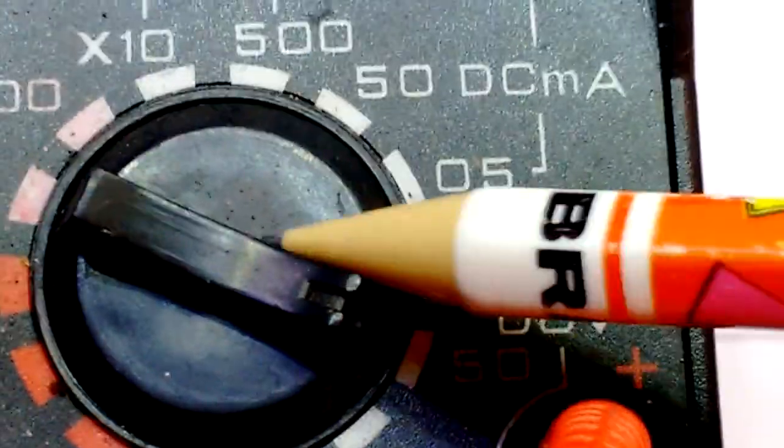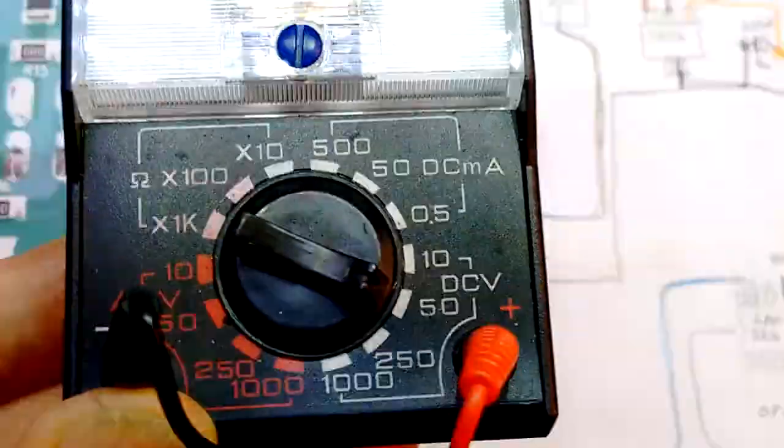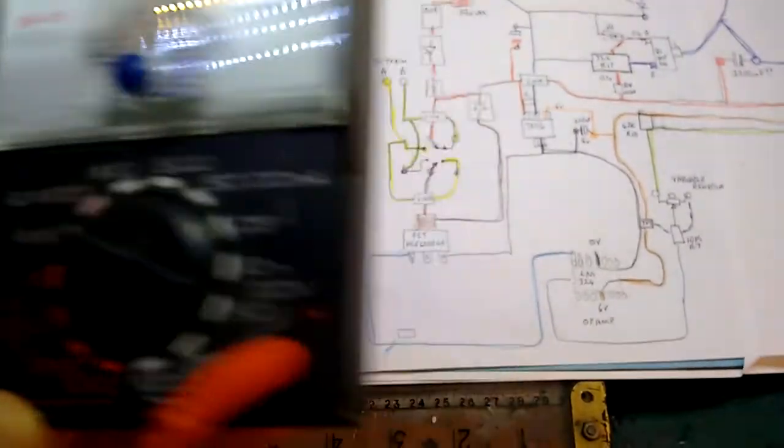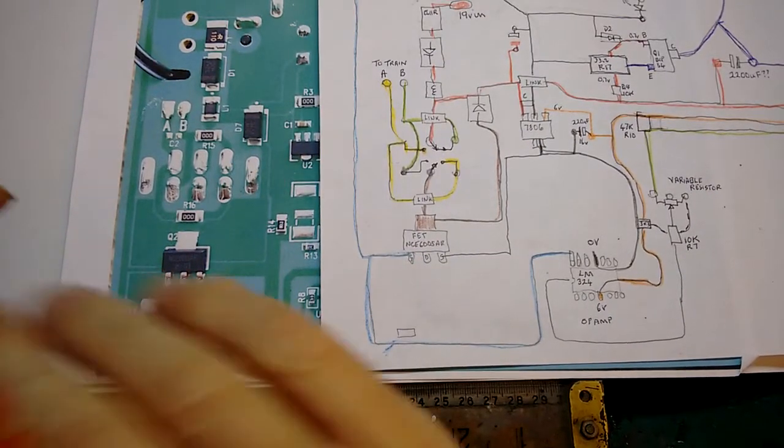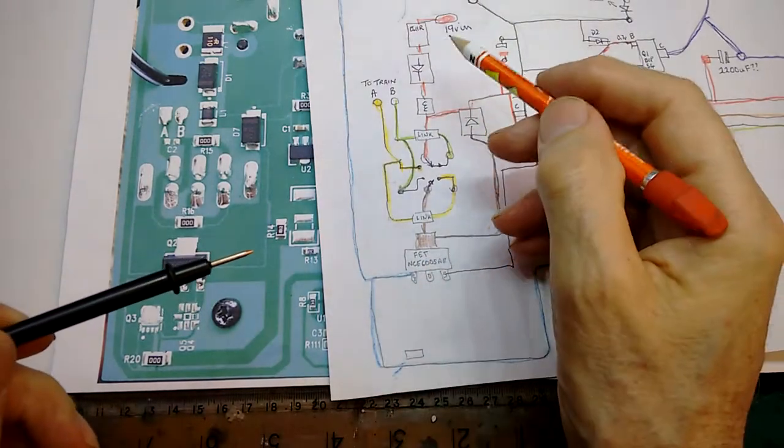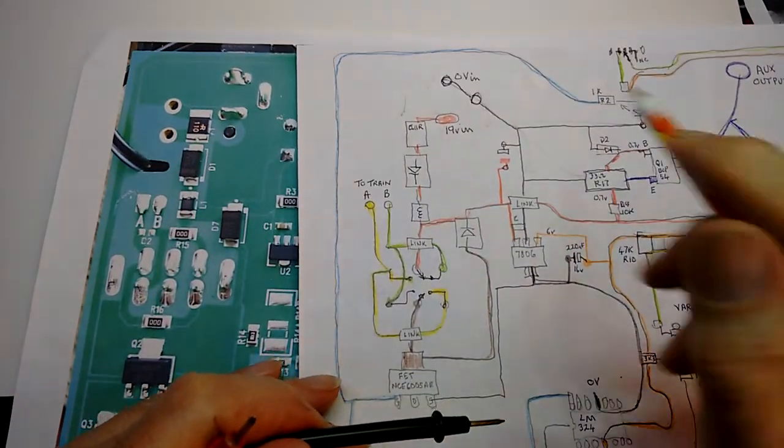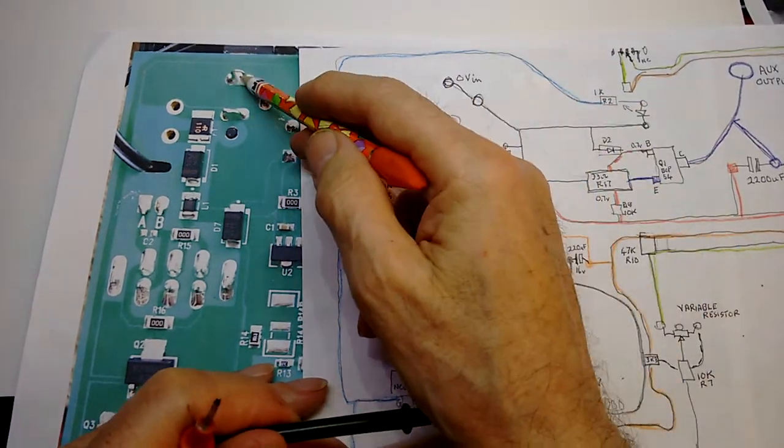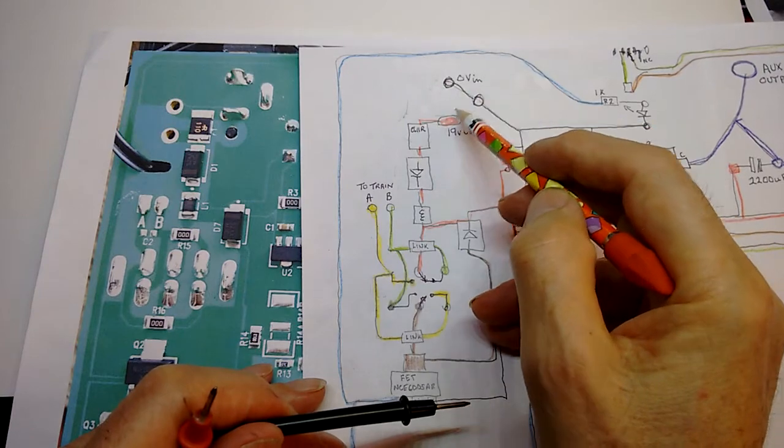And then I'm going to put the probes onto the circuit board so that I can measure the voltages. To start with, I have the input here - these two are the 0 volt inputs, that and that.